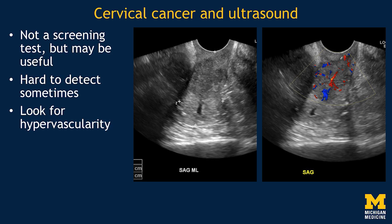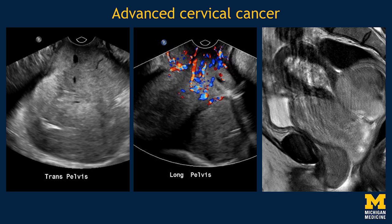Cervical cancer and ultrasound: ultrasound is not a screening test for cervical cancer, and it may be very hard to detect, but we sometimes do. One of the ways we can detect it is to look for hypervascularity. Here's an example of an older woman who had abnormal vaginal bleeding and was noted on transvaginal imaging to have a hypoechoic mass. More striking is the vascularity of this mass. I've seen a number of cervical cancers missed at ultrasound, but in retrospect, if you look back at the Doppler images, there's almost always hypervascularity in the area of that tumor. So think about that pearl when you're looking at pelvic ultrasound.